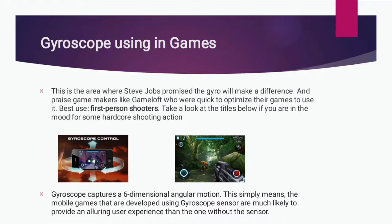Gyroscope use in games: This is the area where Steve Jobs promised the gyro will make a difference, and he praised game makers like Gameloft who were quick to optimize their games to use it. Best use: first-person shooters. Gyroscope captures a 6-dimensional angular motion, meaning mobile games developed using the gyroscope sensor are much more likely to provide an alluring user experience than those without the sensor.